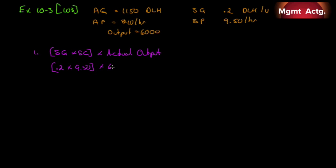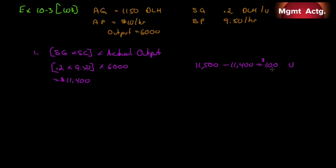Standard quantity 0.2 times standard cost of nine dollars and fifty cents times actual output of six thousand gives us eleven thousand four hundred. The actual direct labor cost was eleven thousand five hundred. Eleven thousand five hundred minus eleven thousand four hundred equals one hundred dollars. Since it's above zero, it's unfavorable. That is our flexible budget variance — one hundred dollars unfavorable.